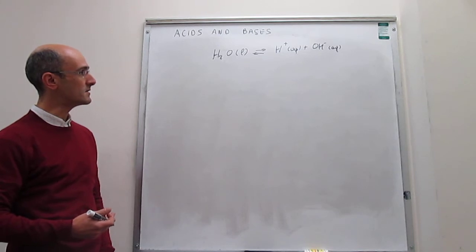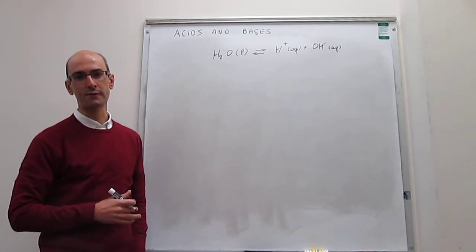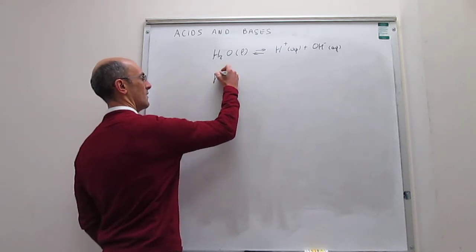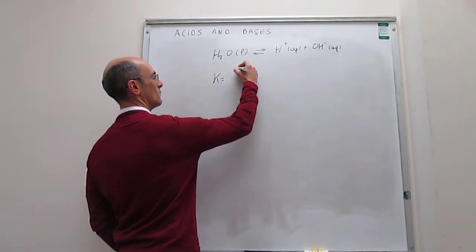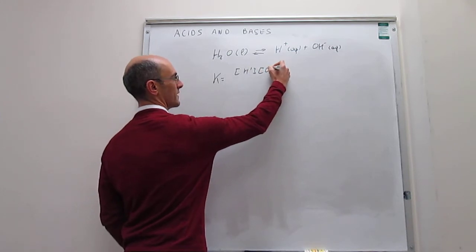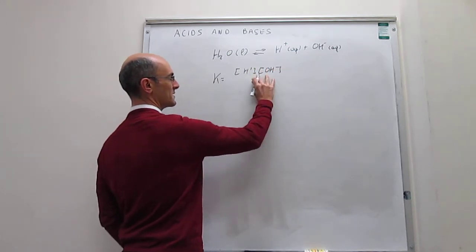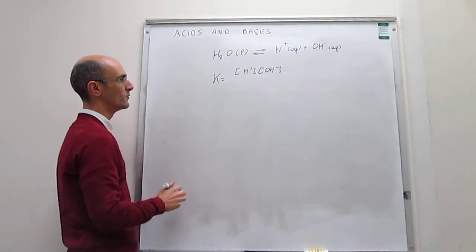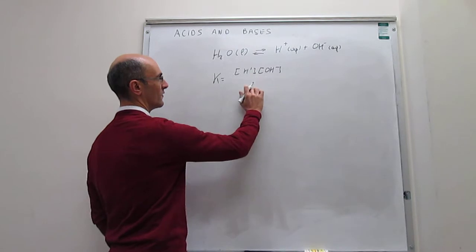So something that is important is to recognize what the equilibrium constant for this dissociation process is, and that will be the following. Notice that that will be the concentration of products, or the activity of products, which we're replacing by molar concentrations, and we're not divided by the reference states anymore.